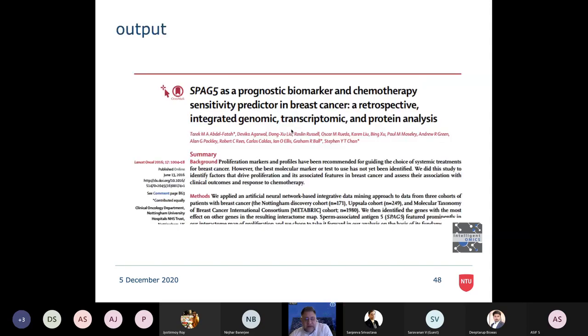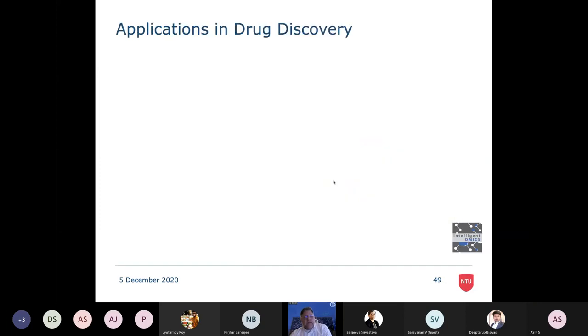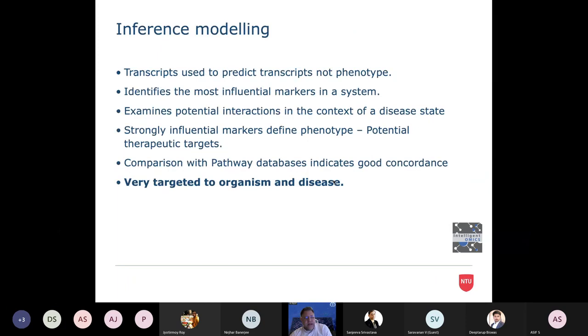Now, on the basis of that, we published this data in Lancet Oncology. We found that SPAG5 was particularly robust, it was the key feature here. And we validated that in a large number of cases. And it predicts proliferation, but also predicts chemotherapy sensitivity. And here we used an integrated genomic, transcriptomic and proteomic approach.